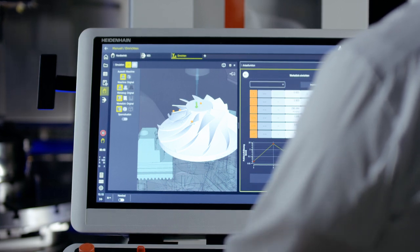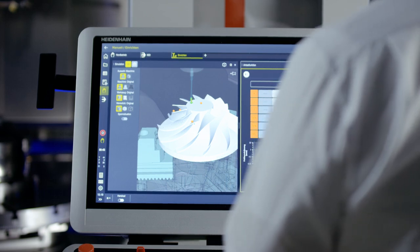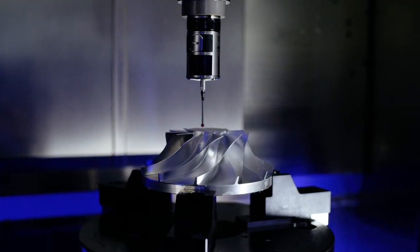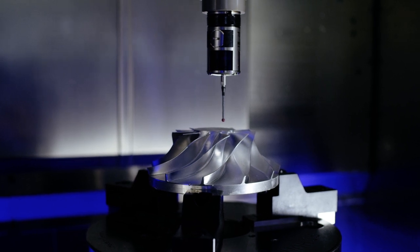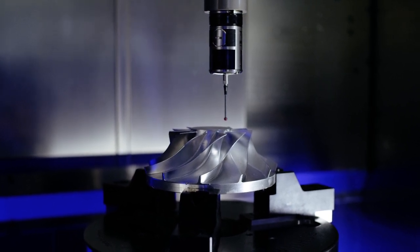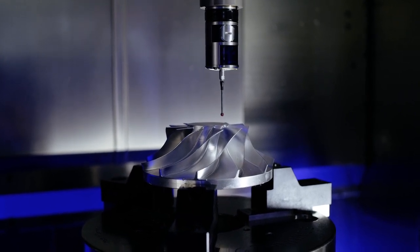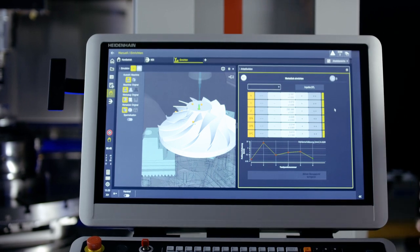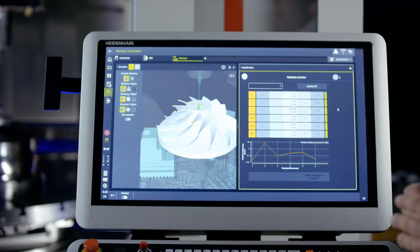Now we go up to the impeller's flange surface and set the next point. As long as we are already up here on the surface, we'll set a third point for the surface orientation. The result shows us that the impeller has already been measured very well. Everything is green.